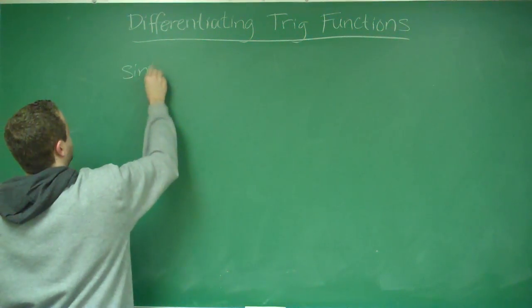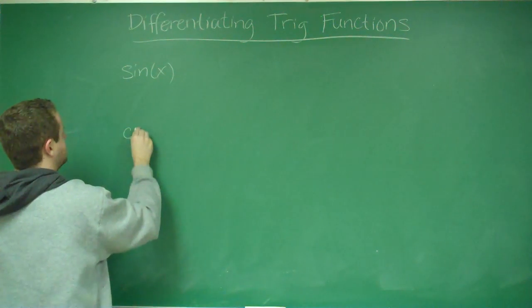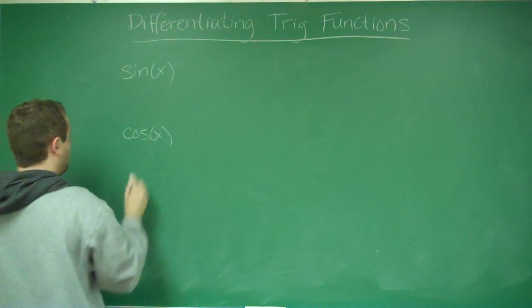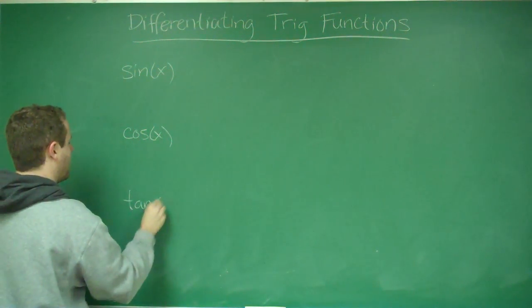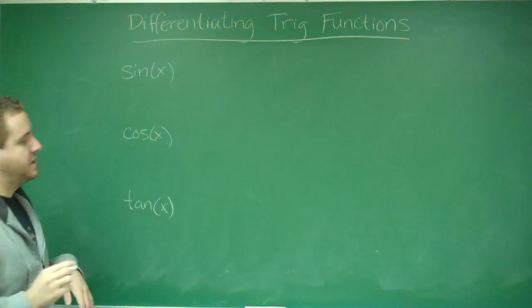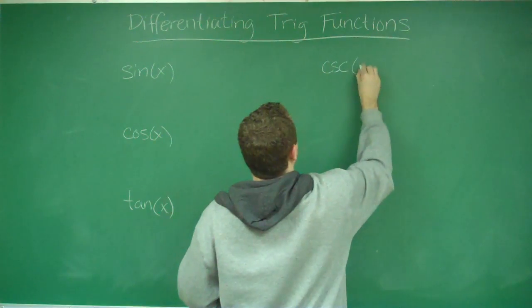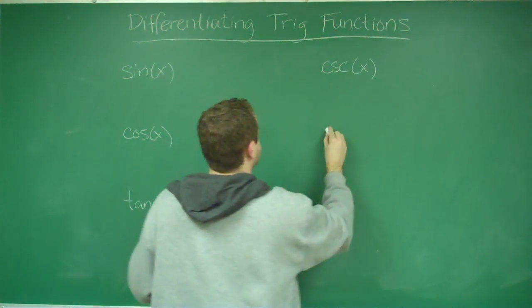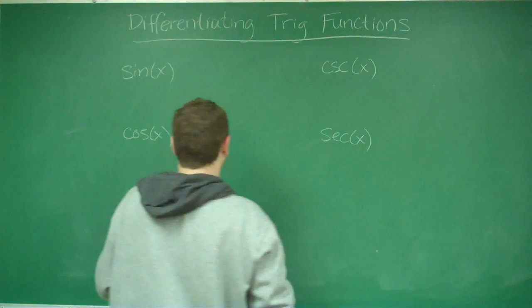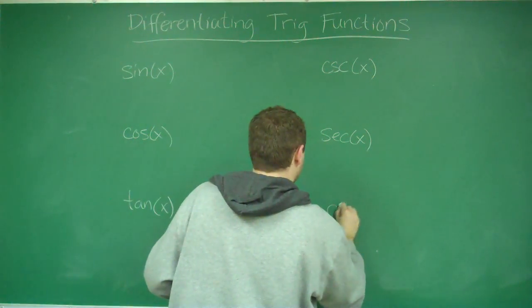We have sine, we have cosine, we have tangent, and we have their reciprocals. The reciprocal of sine is cosecant, the reciprocal of cosine is secant, and the reciprocal of tangent is cotangent.